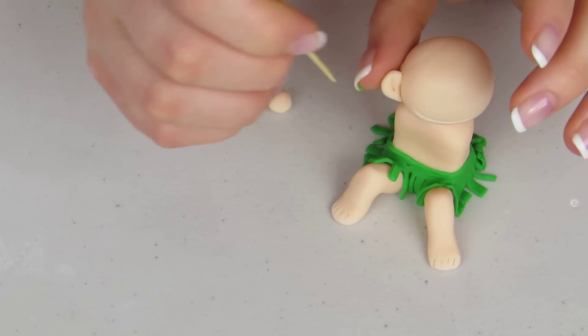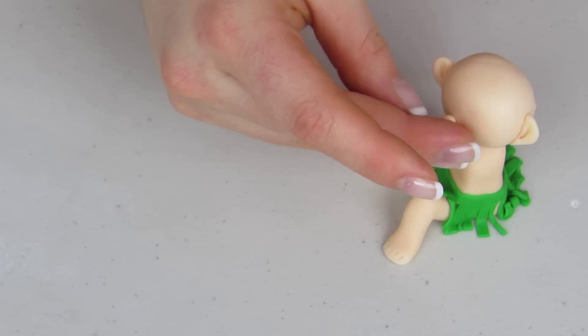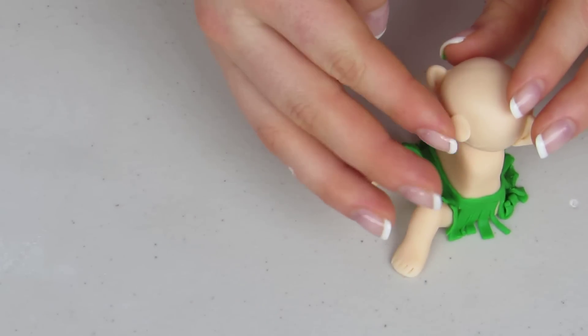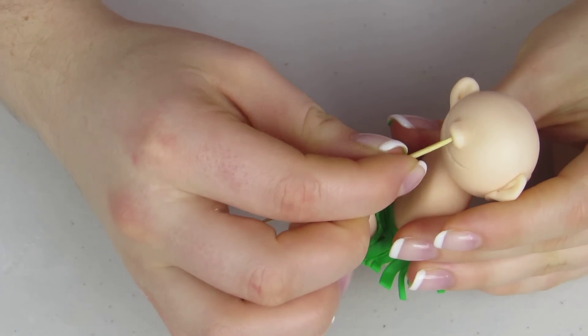I'm gonna add two flat pieces of fondant for his ears and the little ball for his nose. I'm gonna kind of smooth it upwards and give him some little nostrils.